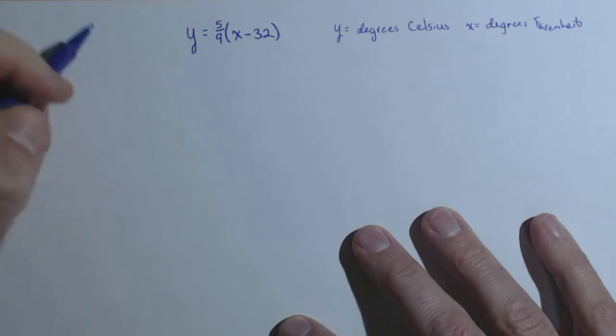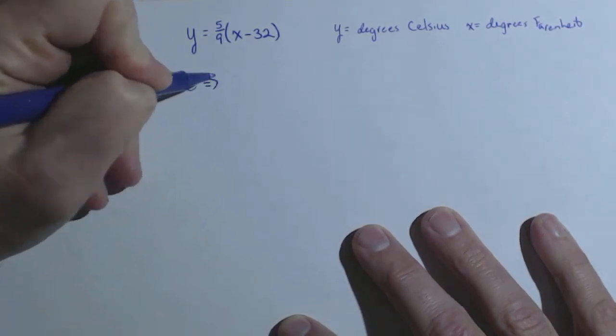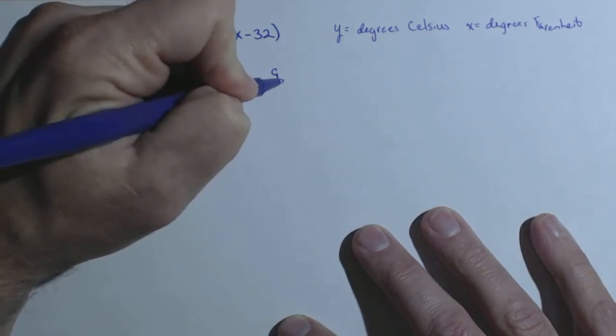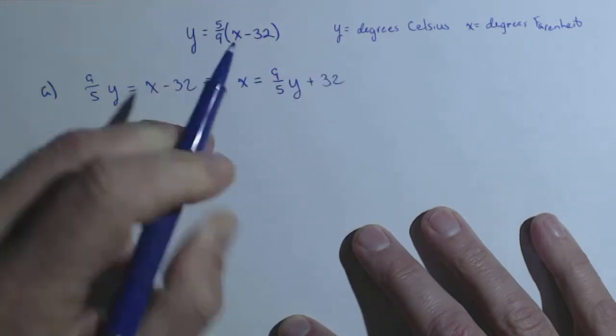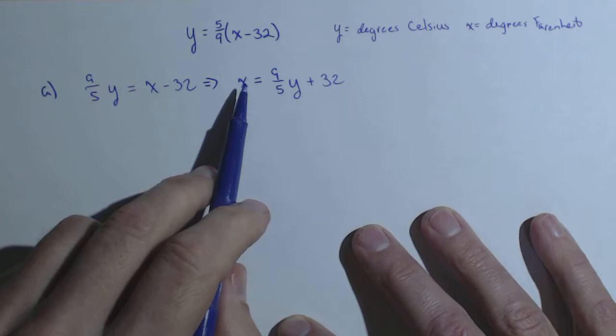First thing we would do is multiply both sides by 9 fifths, and we get 9 fifths y equals x minus 32, and then we would get x equals 9 fifths y plus 32. So now we can convert from degrees Celsius to degrees Fahrenheit.